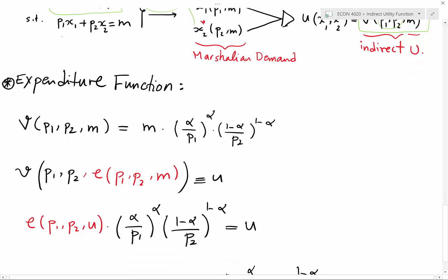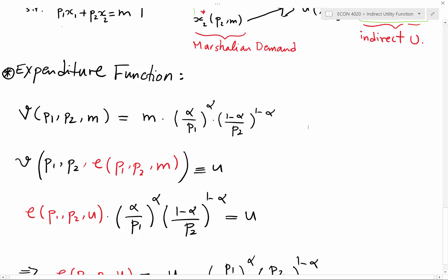To derive the expenditure function, I apply identity number two from page 106 of Varian's textbook. This identity states that the indirect utility function is equivalent to the direct utility function.